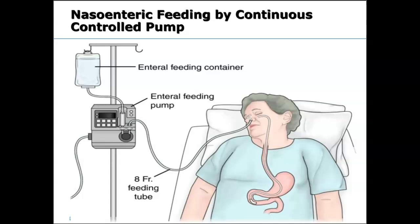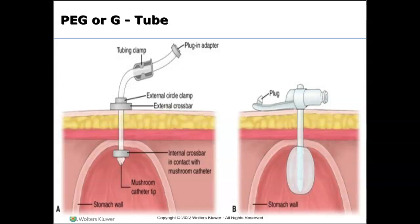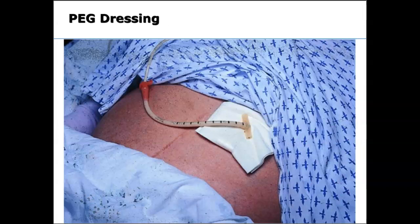The PEG tube goes through the skin percutaneously — percutaneous endoscopic gastrostomy. The surgeon inserts an endoscope, a thin flexible tube with a tiny camera and light on the tip, through the mouth and into the stomach to guide the G-tube into place. The PEG tube dressing should be kept clean and dry, and changed at least daily, but more frequently if it gets wet or dirty.